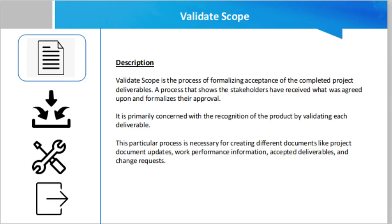Validate Scope is a process of formalizing acceptance of the completed project deliverables — a process that shows stakeholders have received what was agreed upon and formalizes their approval. It is primarily concerned with the recognition of the product by validating each deliverable.